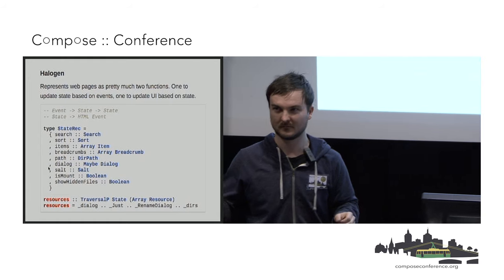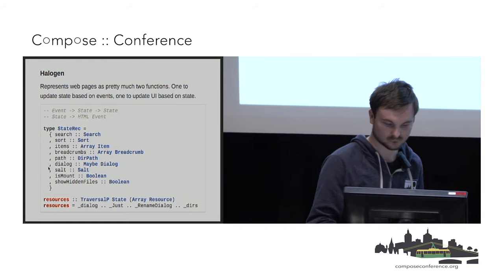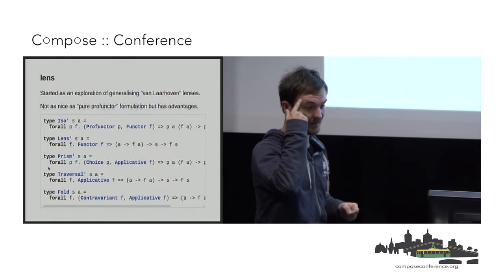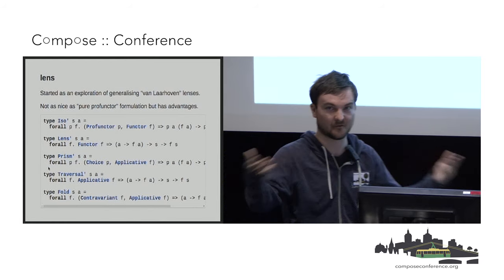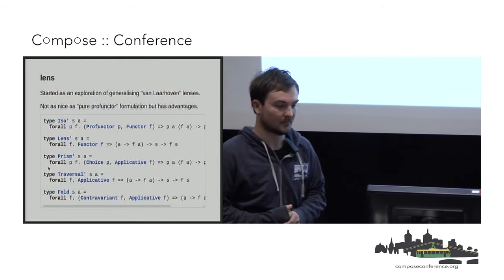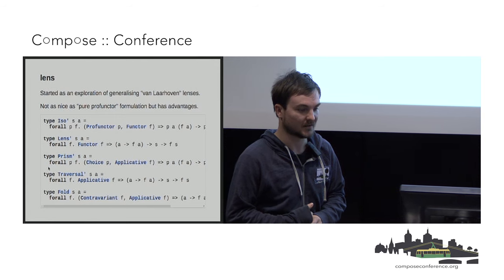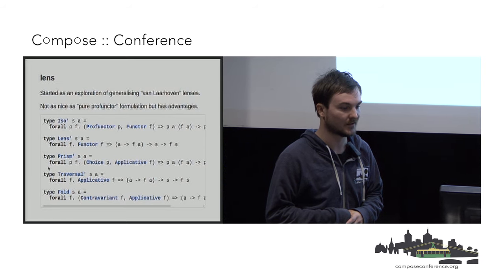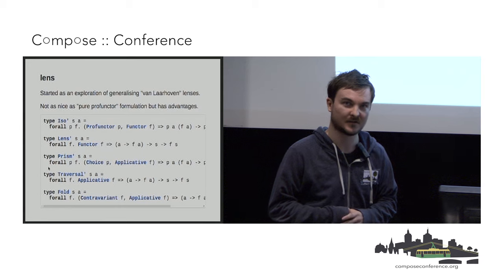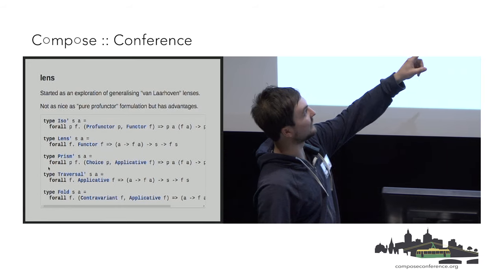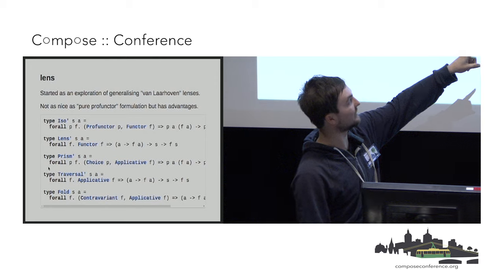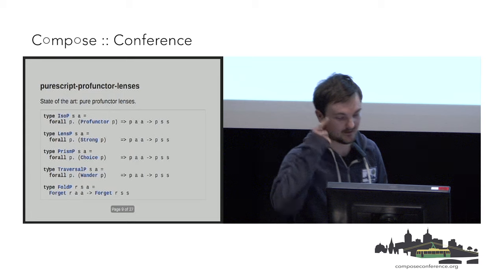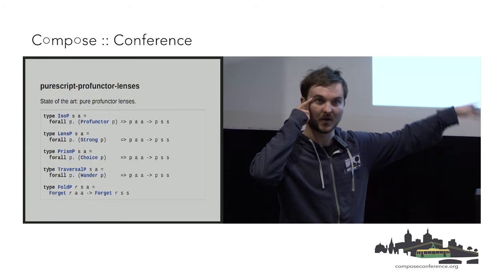Lens is a library written in Haskell. It's the original motivation for a lot of this. It's not quite as nice as the example I just showed. If you look at the encoding, you don't just need to know about profunctors — you also have to know about why that functor is in there and why this applicative is in there. So it's not quite as nice. If you're looking to learn how lenses actually work, the profunctor formulation is a lot nicer to work with.